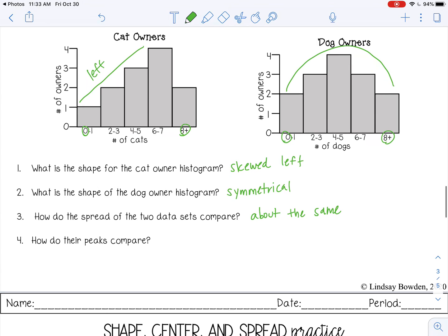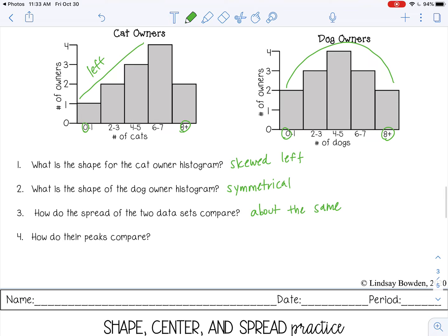And then how did their peaks compare? They both have one peak. So they're both unimodal. But the cat peak is greater than the dog peak. So that just means the average of the cat owners is higher than the average of the dog owners.